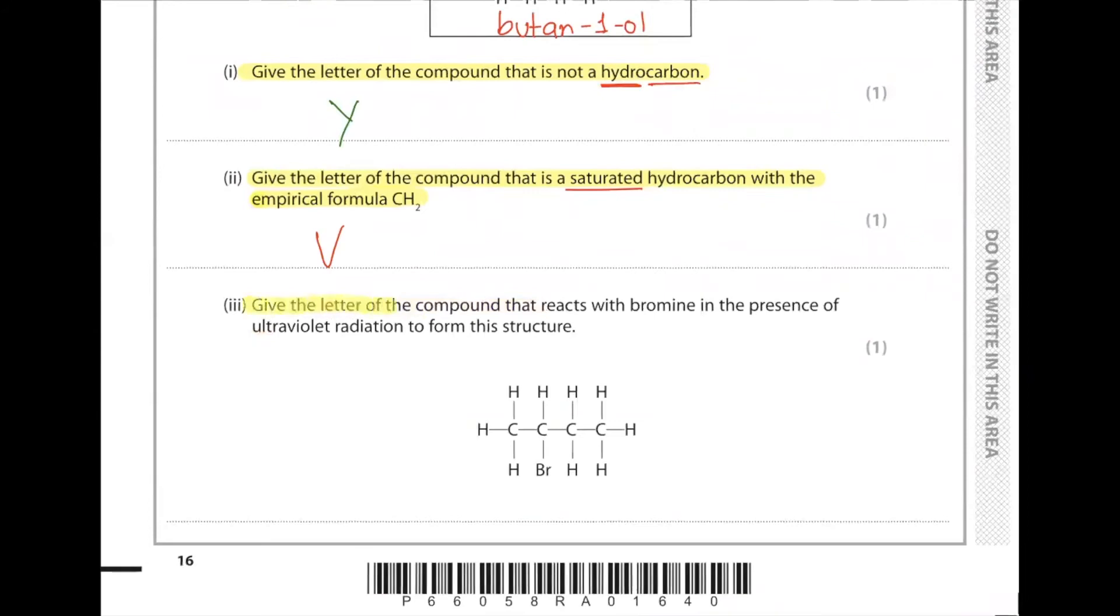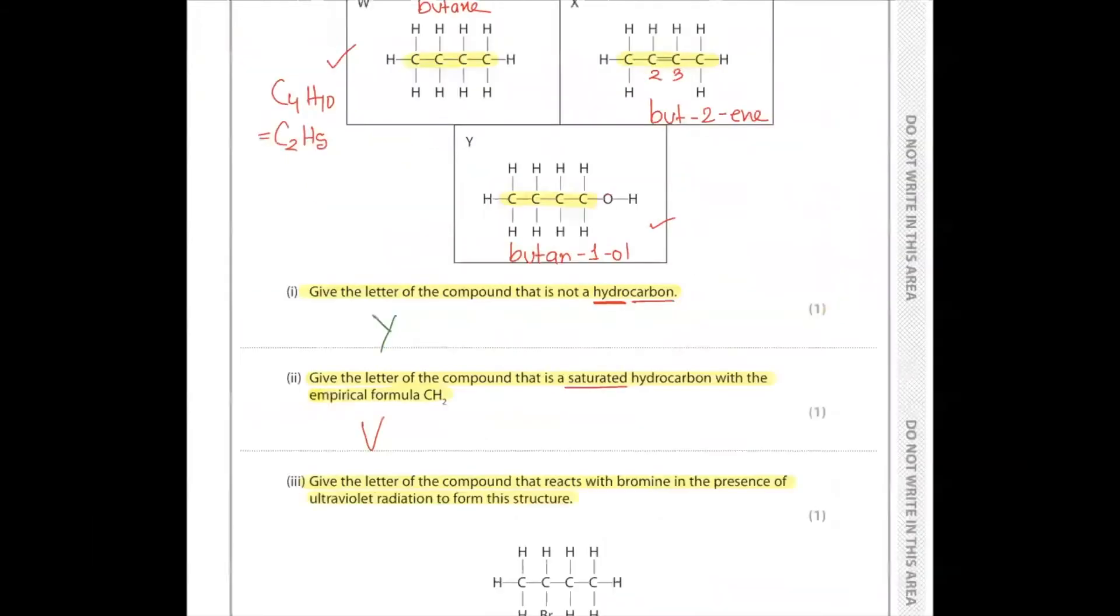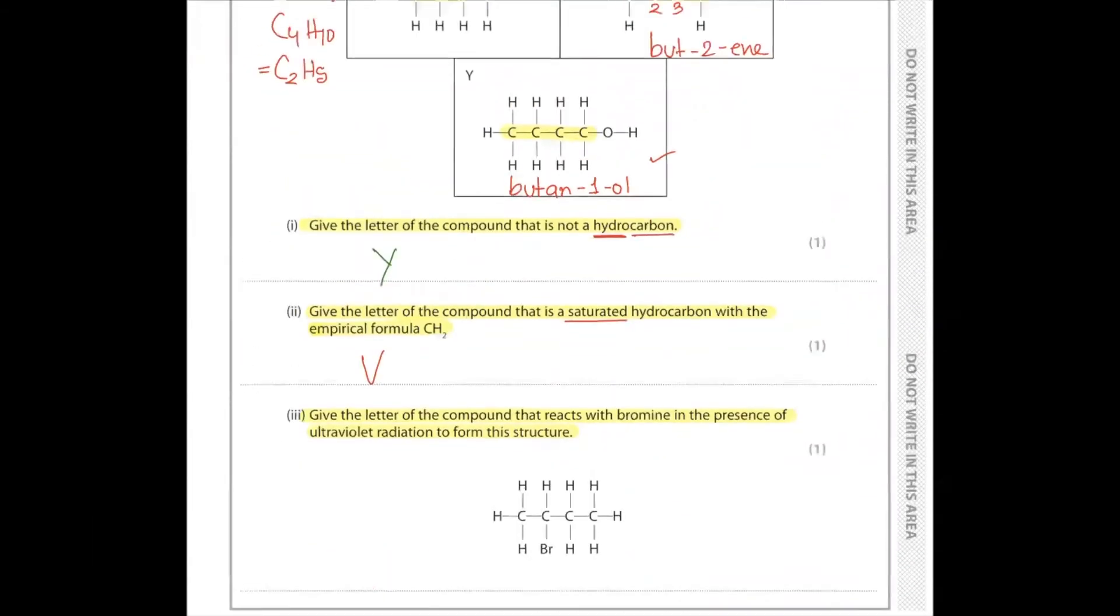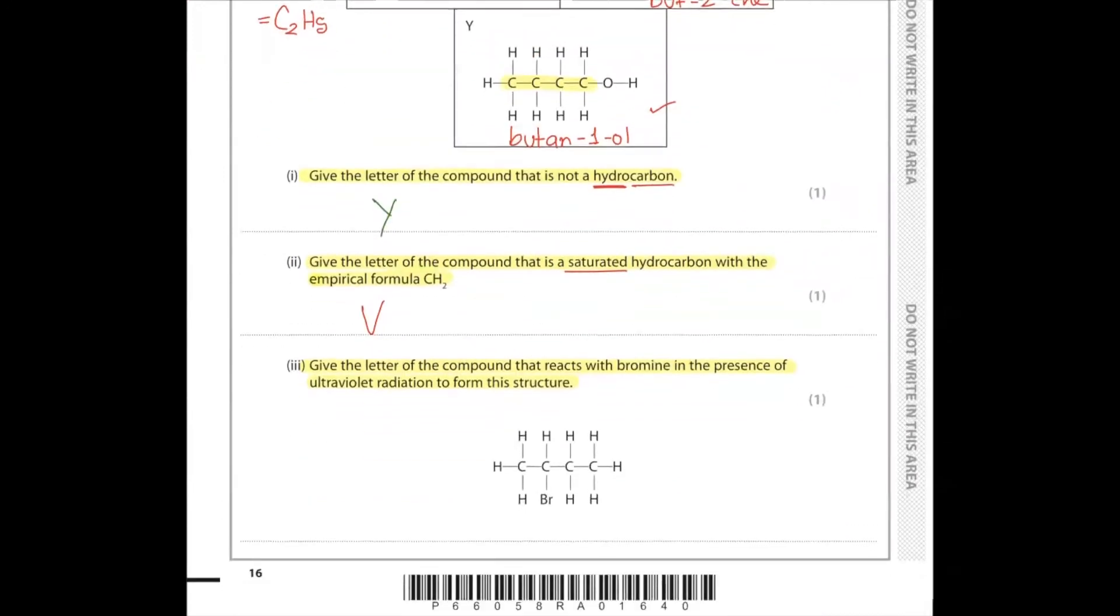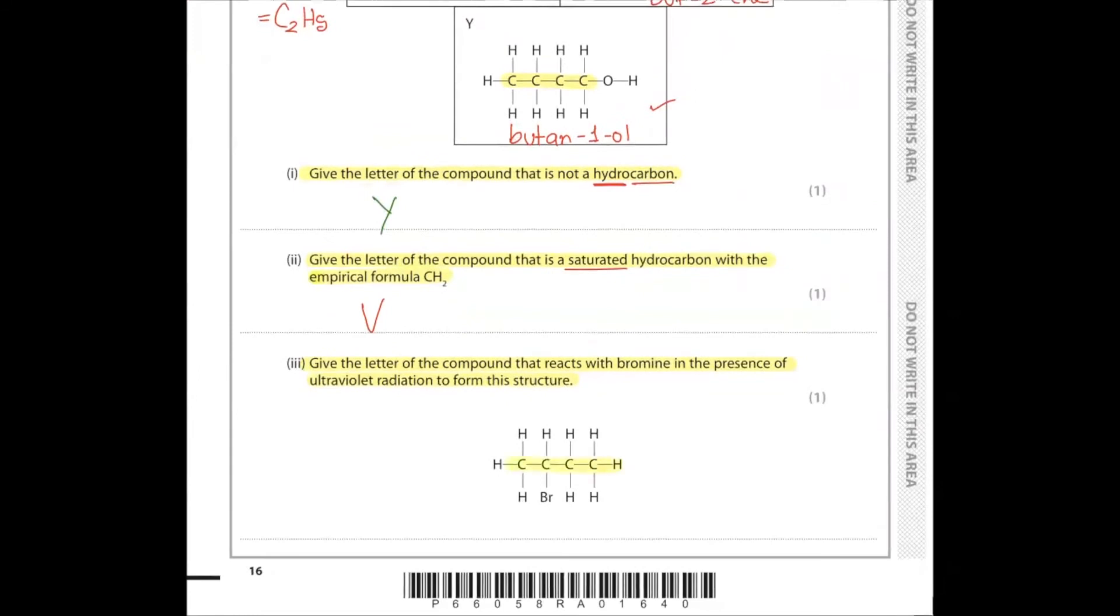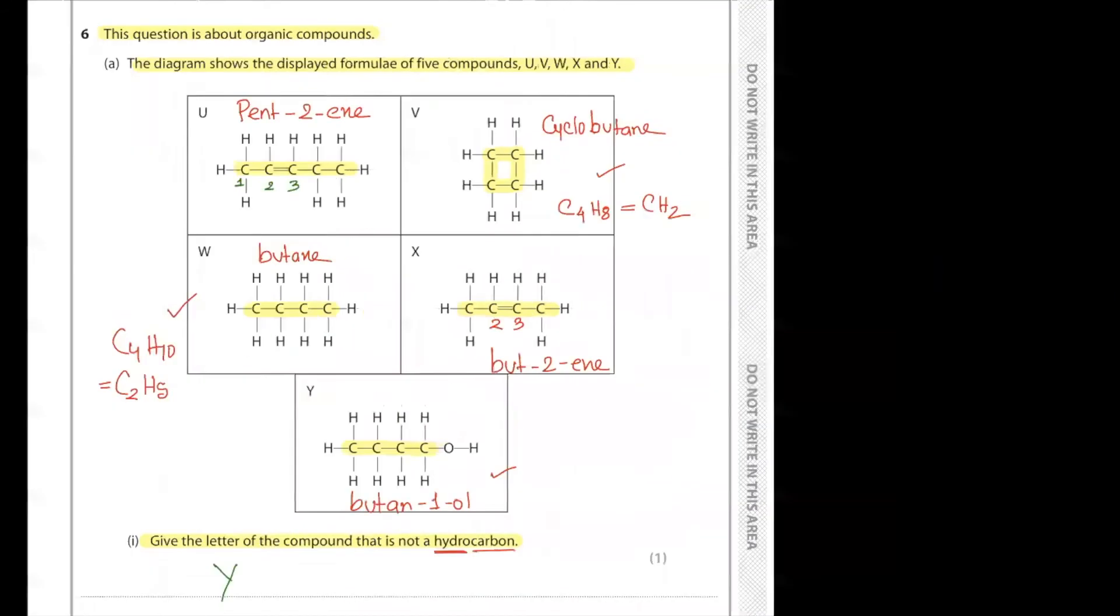Part 3. Give the letter of the compound that reacts with bromine in the presence of ultraviolet radiation to form this structure. When alkanes react with bromine in ultraviolet radiation, they produce bromobutane through free-radical substitution. Our answer will be W.